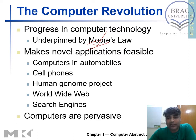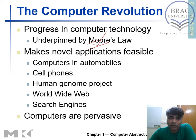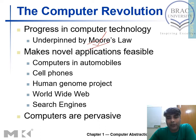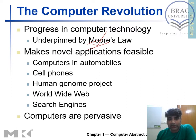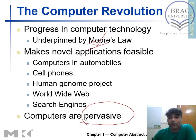Moore predicted that the number of transistors would double after 18 months or 2 years. We also have search engines — we all know about Google search engine; you write something in the text box and you get the right result. These all require high-performance computers, which are possible because of advancement in transistor technologies. Computers are now pervasive, meaning we use computer-powered devices in our day-to-day activities.